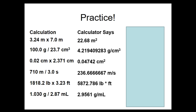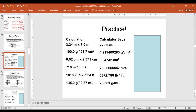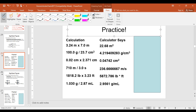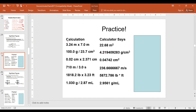If we look at the first example, we have 3.24 times 7.0. We have to look at our two numbers: 3.24 has three significant figures, and 7.0 has only two significant figures. Because 7.0 only has two significant figures, our answer should be rounded to 23, which will only have two significant figures.